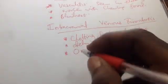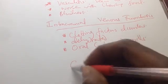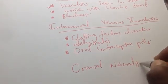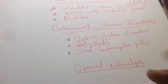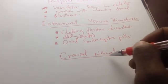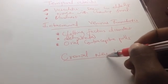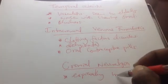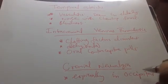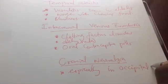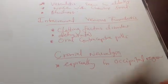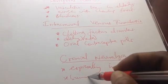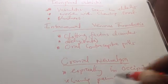The last type of headache we will discuss is cranial neuralgia. In cranial neuralgia, the pain is due to damage to nerves, especially in the occipital region. There are nerves in the occipital region, and if they become damaged, the patient experiences a burning pain.